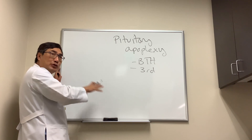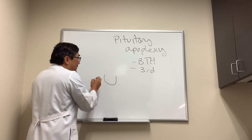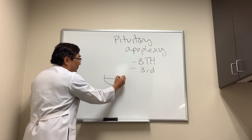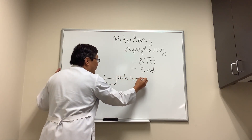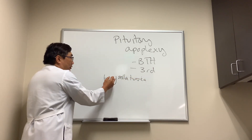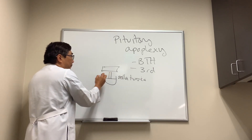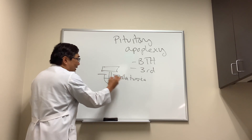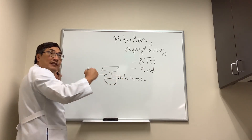Inside the sella turcica — which means 'Turkish saddle' — the pituitary gland lives, along with the stalk and the chiasm. What's interesting about the anatomy of the sella is there's a diaphragm of meninges that covers it.